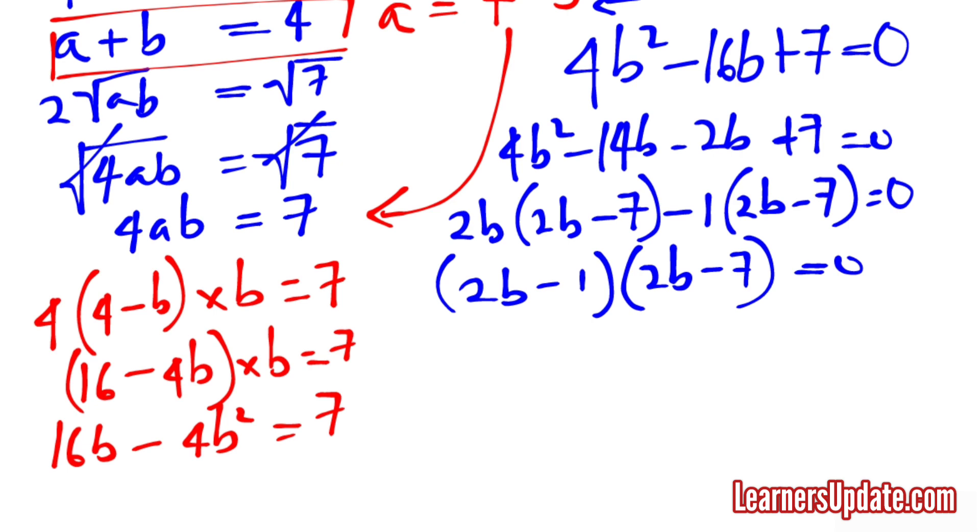This means that 2B minus 1 is equal to 0 or 2B minus 7 is equal to 0. From this first one we see that B is simply 1 over 2, and from the second one we see that B is 7 over 2.